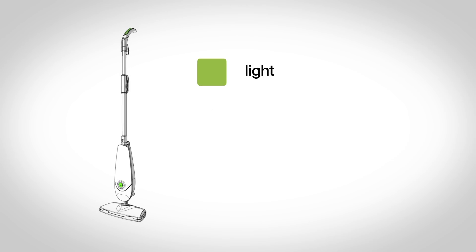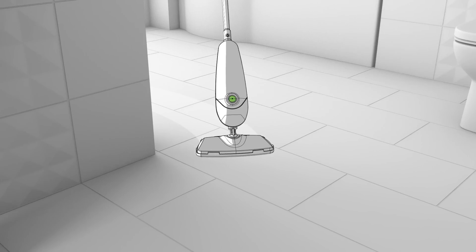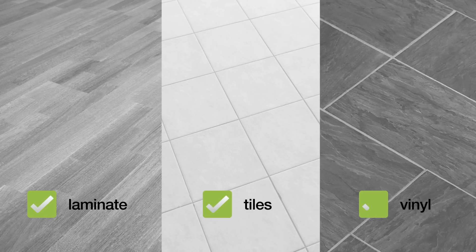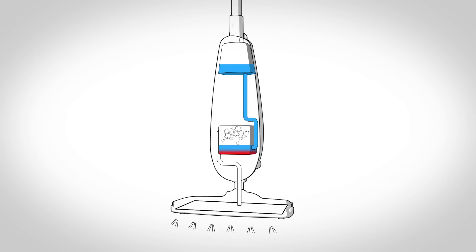Steam mops are light, quick and easy to use. They're ideal if you're looking to clean sealed hard floor surfaces or freshen up carpets. Perfect for laminates, tiles and vinyl. They are quick to heat up and the steam is instant. They can also be refilled when in use at any time.